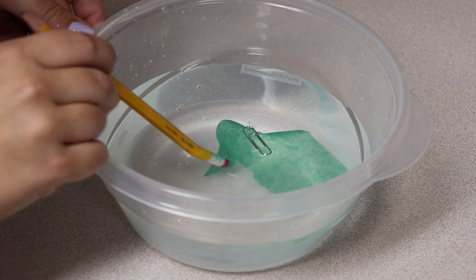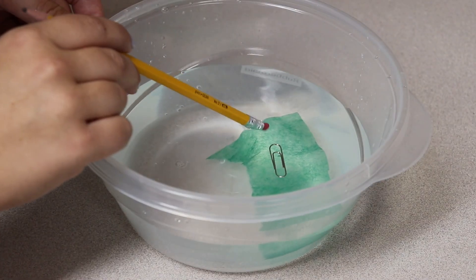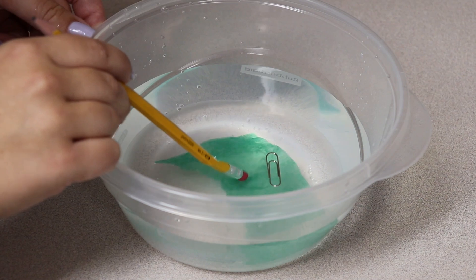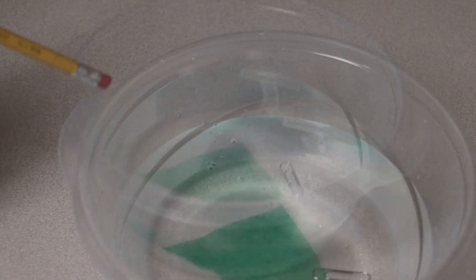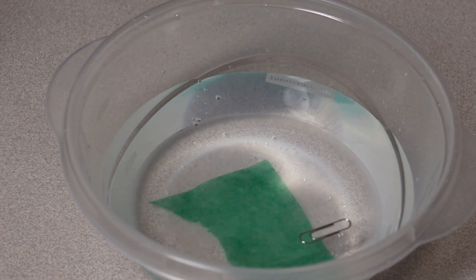Our paper clip didn't sink because of the surface tension. Think of it like a skin on the surface of the water where the water molecules hold tight together. Many insects such as water striders use the skin to walk across the surface of a stream.